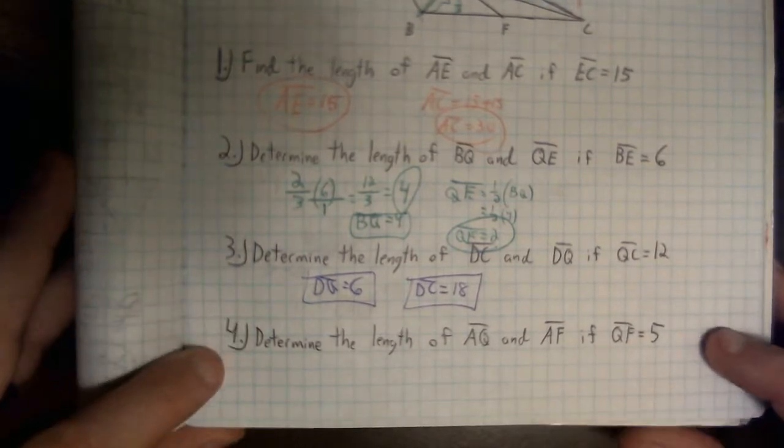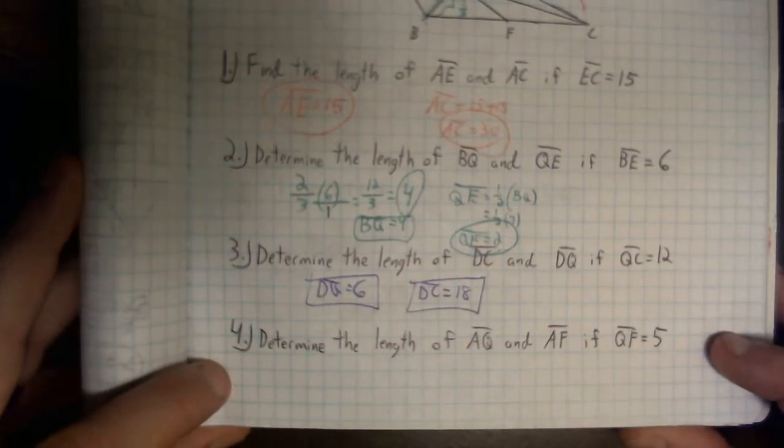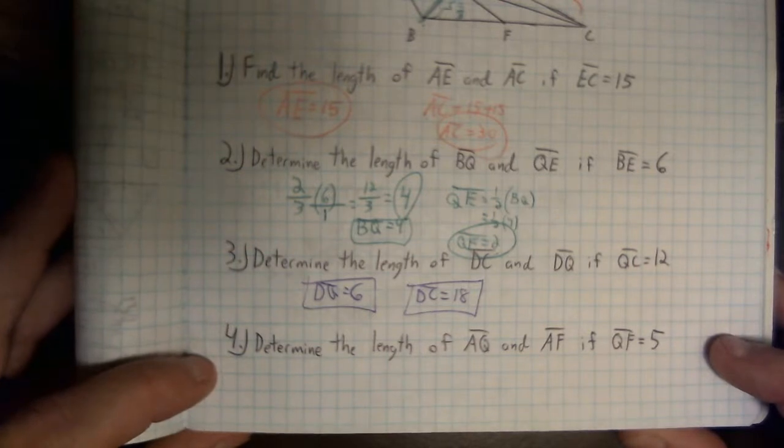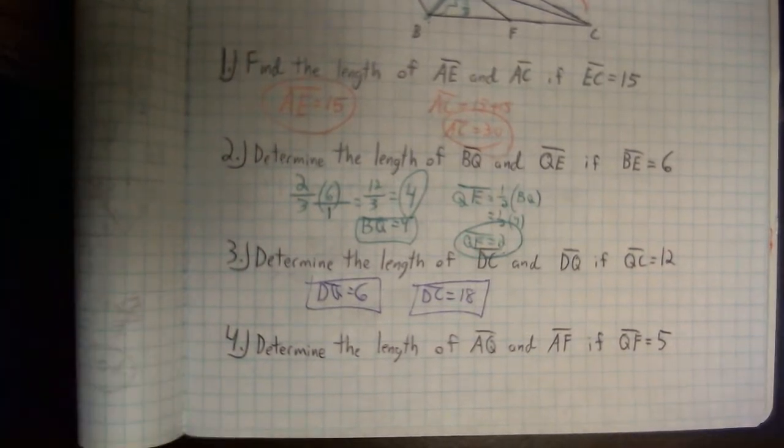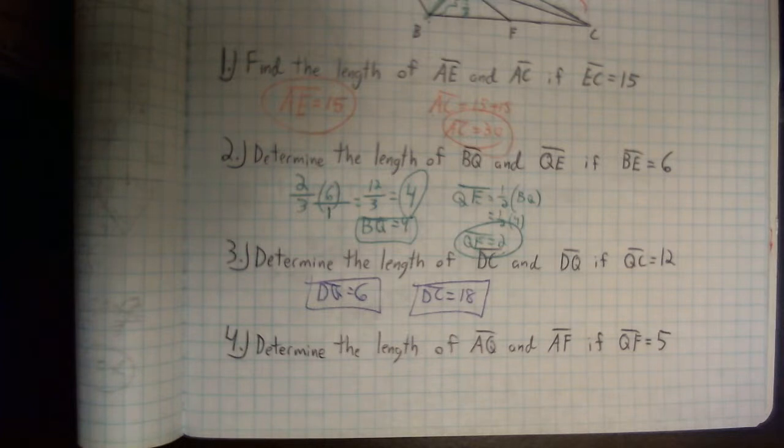Our last problem. Number 4 says, determine the length of AQ and AF if FQ equals 5. Why don't you guys take a second to pause this video, try this one out on your own. So, keep in mind the ideas of having half lengths compared to twice the size when you're talking about comparing two smaller pieces and also the idea of those pieces being one third the size of the entire length. Pause the video, try it and we'll discuss it in a second.